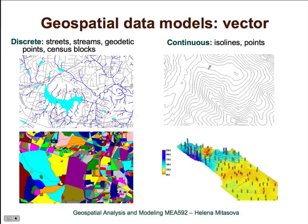You can see that we can represent elevation both as raster and as vector data. The second example shows precipitation data from our raster example, but here as points with values of annual precipitation. So again we have both raster and vector representation.